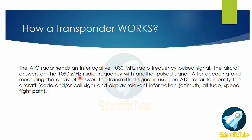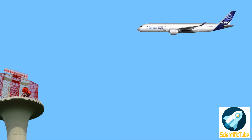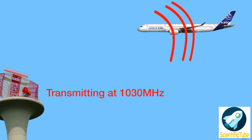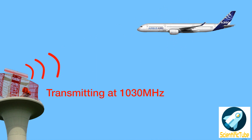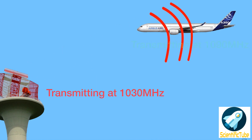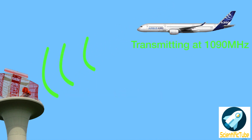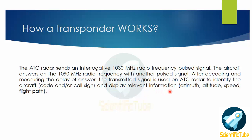Now let's have a look at how the transponder works. The air traffic radar sends an interrogation at 1030 megahertz radio frequency pulsed signal. The aircraft answers on 1090 megahertz with another pulsed signal. After decoding and measuring the delay, the transmitted signal is used on the ATC radar to identify the aircraft code or call sign and display relevant information like azimuth, altitude, speed, and the flight plan.